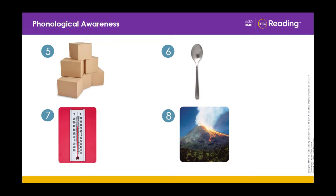Picture number six is spoon. How many syllables are in the word spoon? One syllable. Great job. Picture number seven is thermometer. How many syllables are in the word thermometer? Four syllables. Great work.